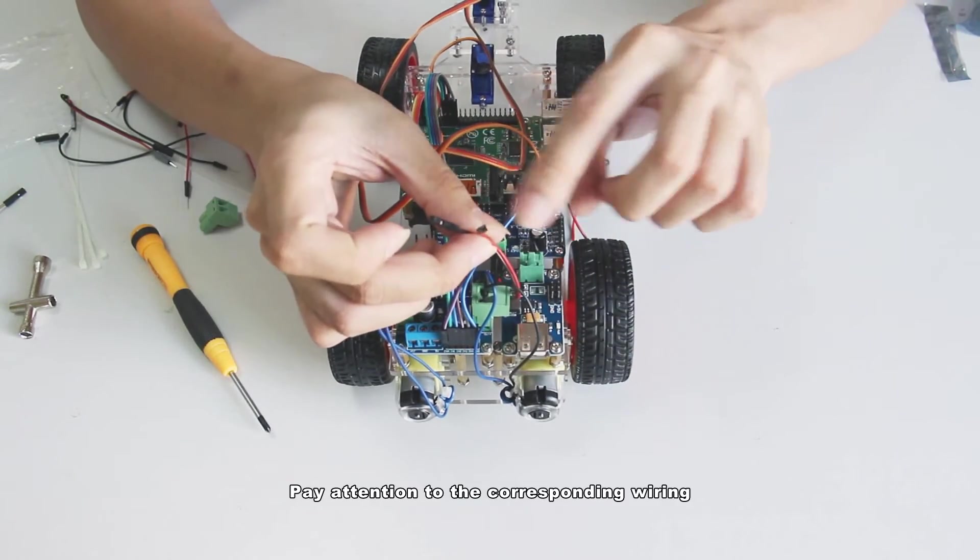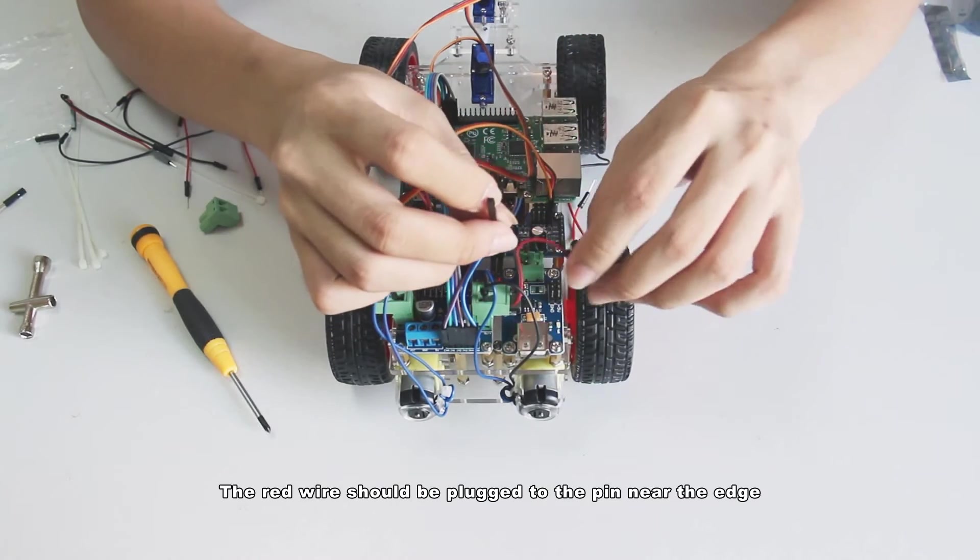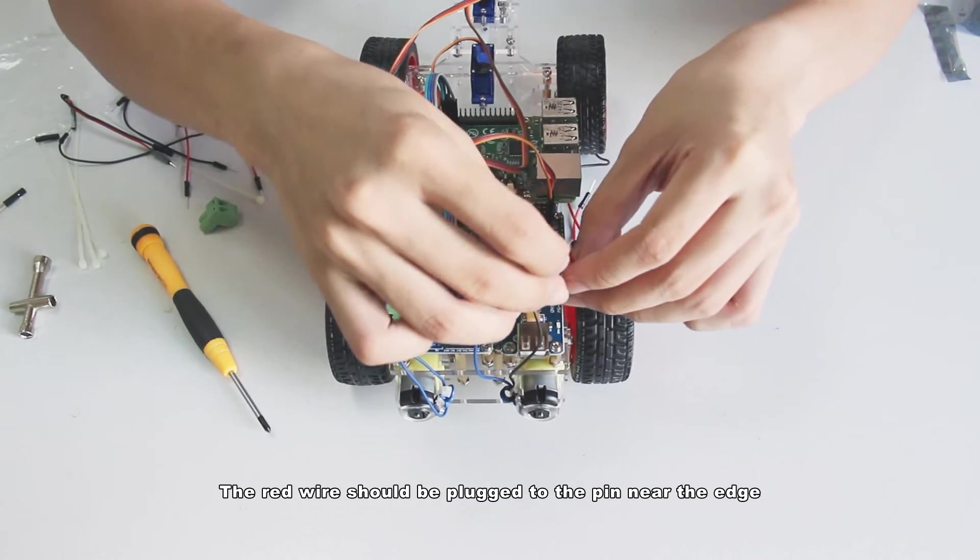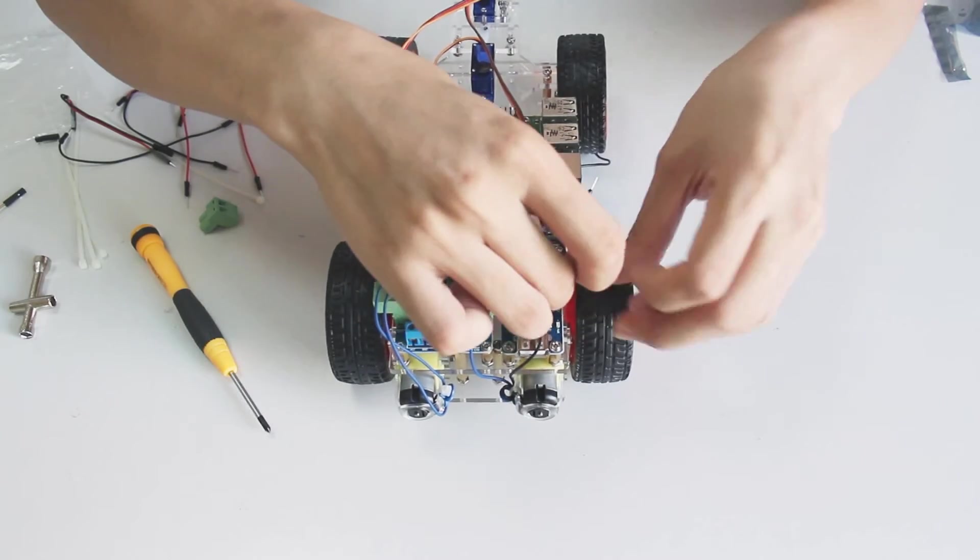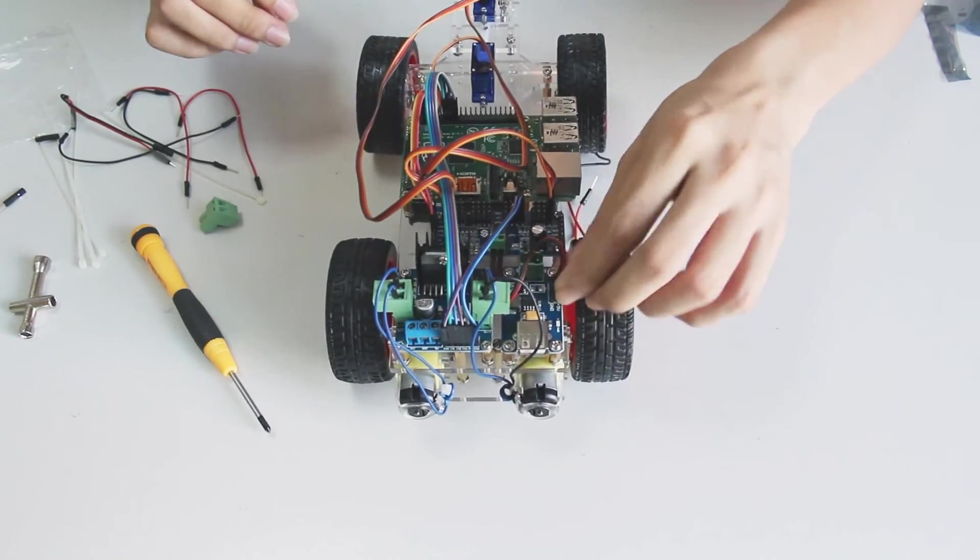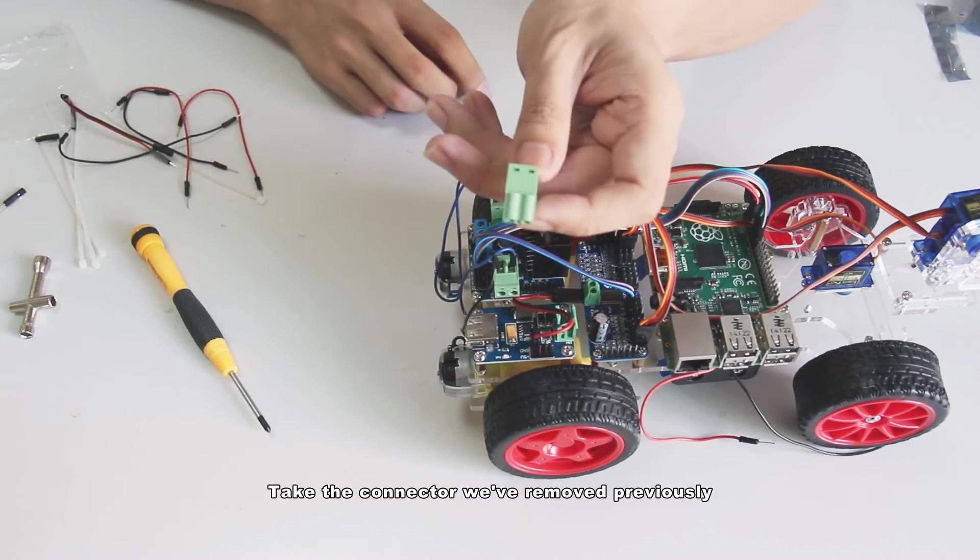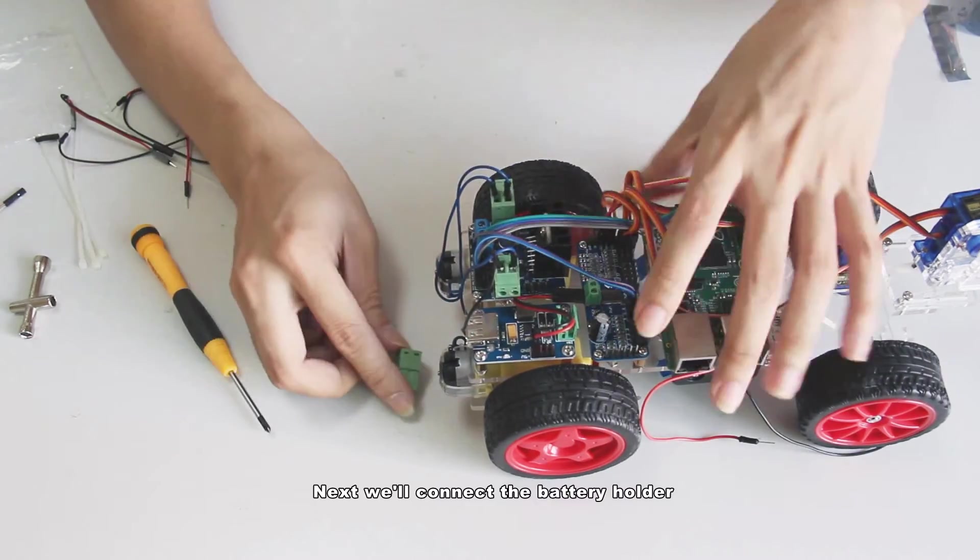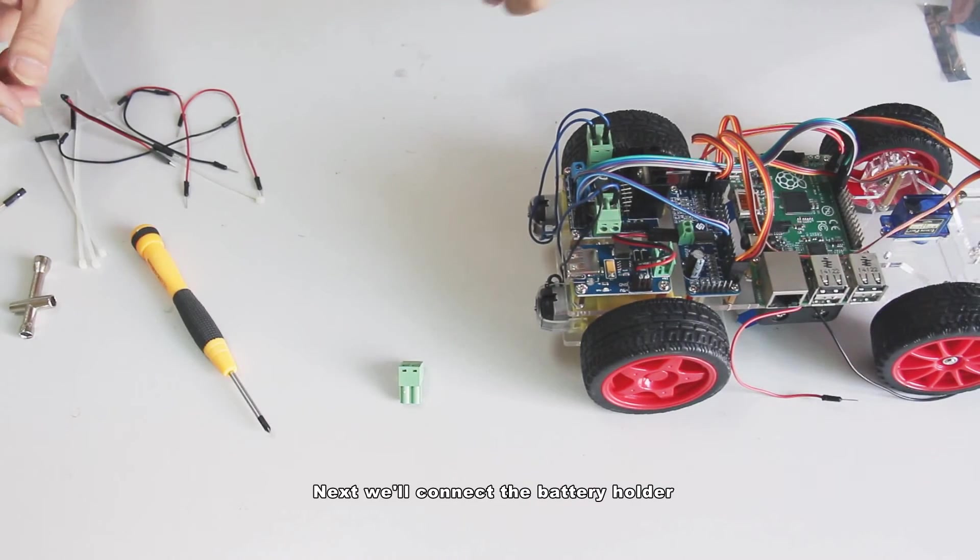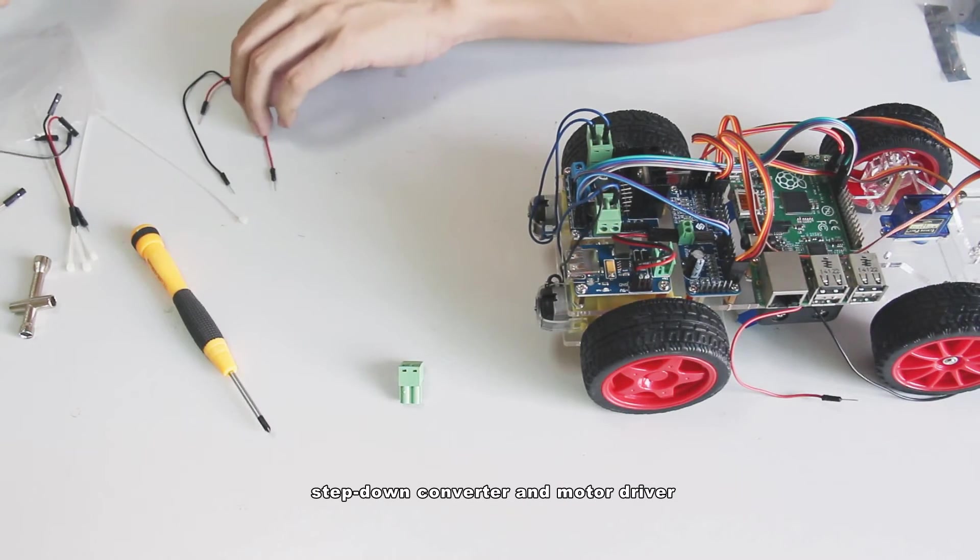Then connect the other end to 2 pins nearest to the USB port on the module. Pay attention to the corresponding wiring. The red wire should be plugged to the pin near the edge. Take the connector we have removed previously.